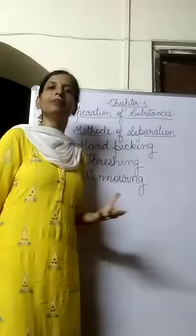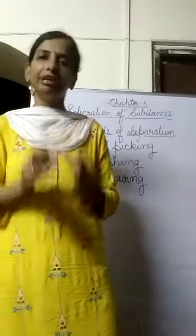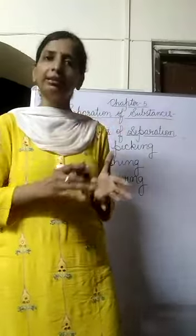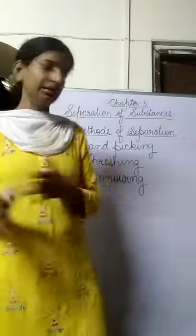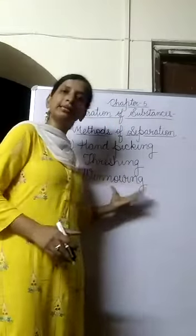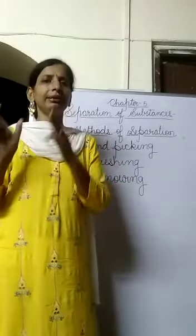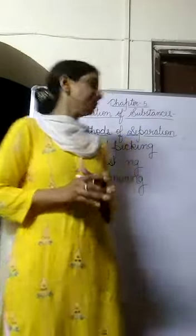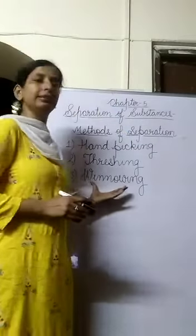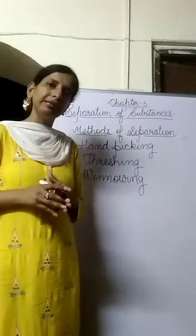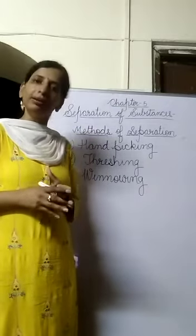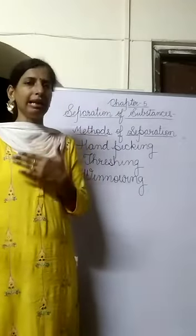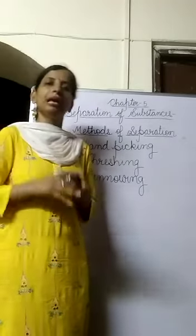Winnowing is a method adopted by farmers in the field to separate grain from husk. Grains are heavier and husk are lighter particles. So winnowing is a method in which heavier particles are separated from lighter particles with the help of wind. It is generally used by farmers to separate grain from husk.